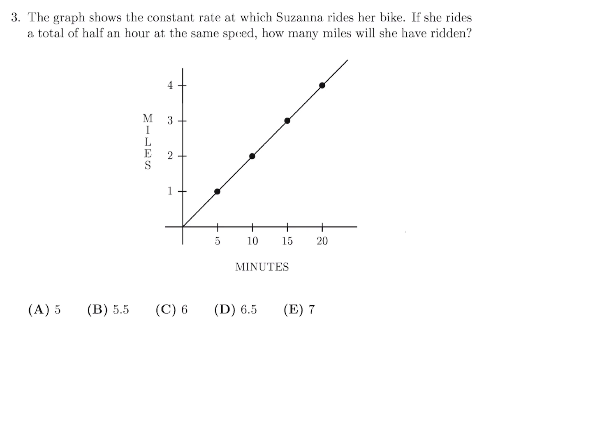The graph shows the constant rate at which Susanna rides her bike. If she rides a total of half an hour at the same speed, how many miles will she have ridden? You can use any of these. I'll just use 5 and 1. That means 1 mile is covered in 5 minutes. So the same ratio, since it's constant speed, will apply for half an hour, which is 30 minutes. So X miles over 30 minutes, like that. Cross-multiply, and you get 5X is equal to 30. And therefore, X is equal to 30 divided by 5, which is 6. So 6 miles is how far she will ride in half an hour. So the answer for number 3 is C.